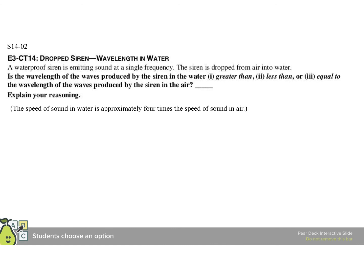All right. A waterproof siren is emitting a sound at a single frequency. The siren is dropped from air into water. Is the wavelength produced by the siren in the water greater than or less than or equal to the wavelength of the waves produced by the siren in the air. And additional piece of information, the speed of sound in water is about 4 times faster than the speed of sound in air.